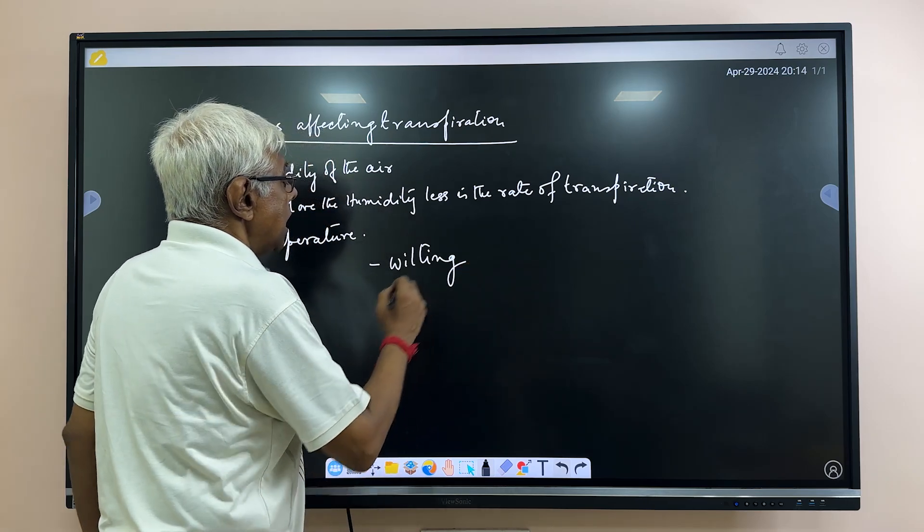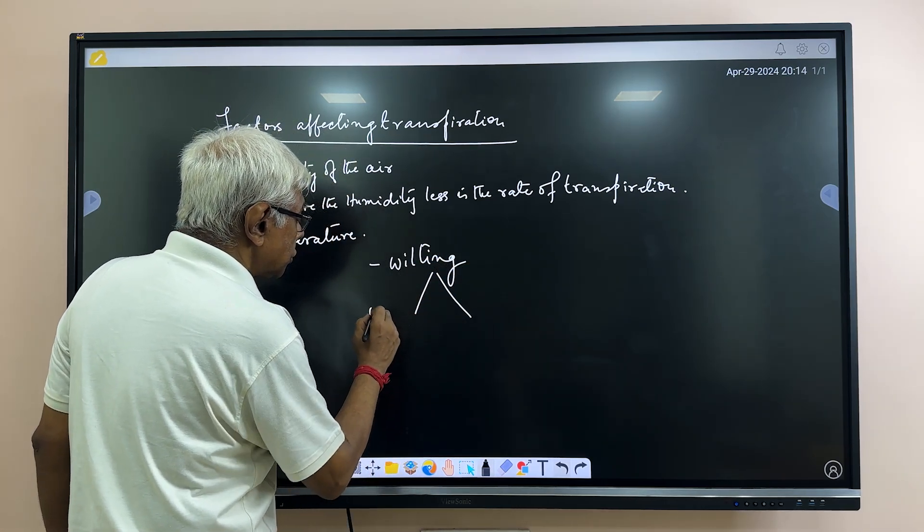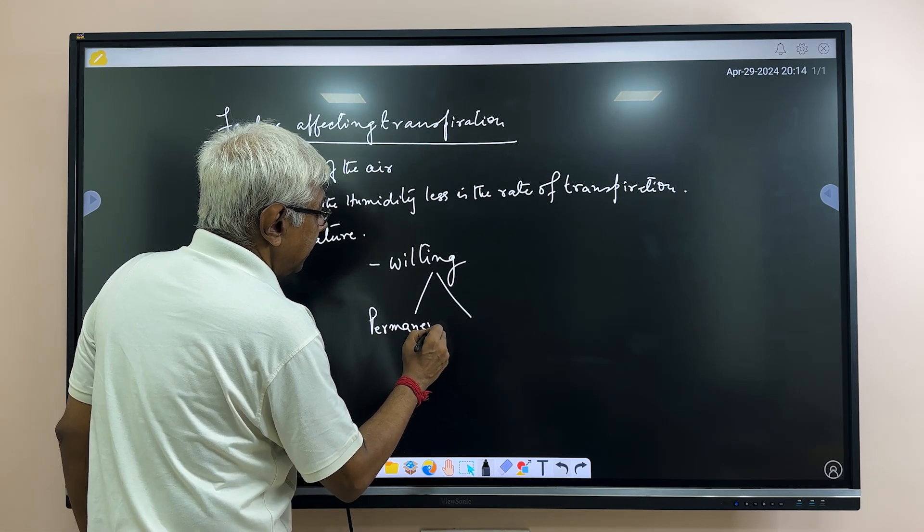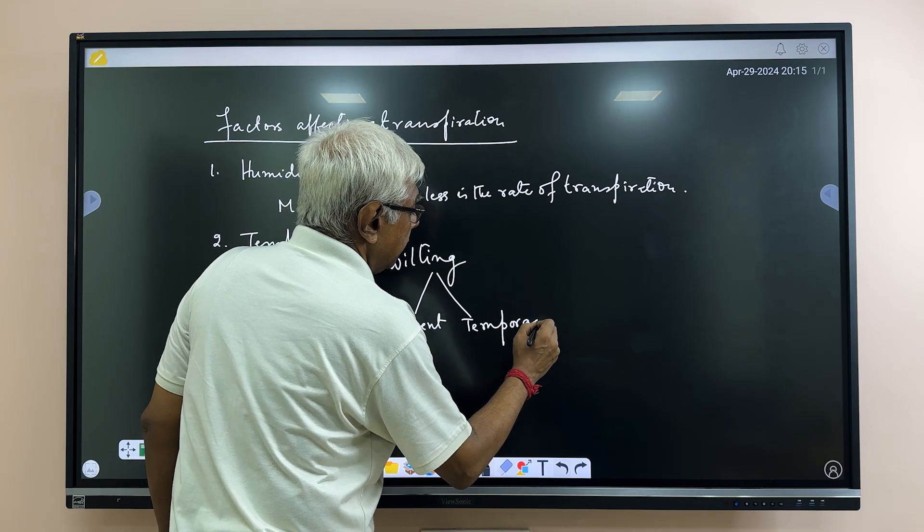Now, this wilting phenomenon has got two parts. One is called as permanent wilting. And the other is temporary wilting.